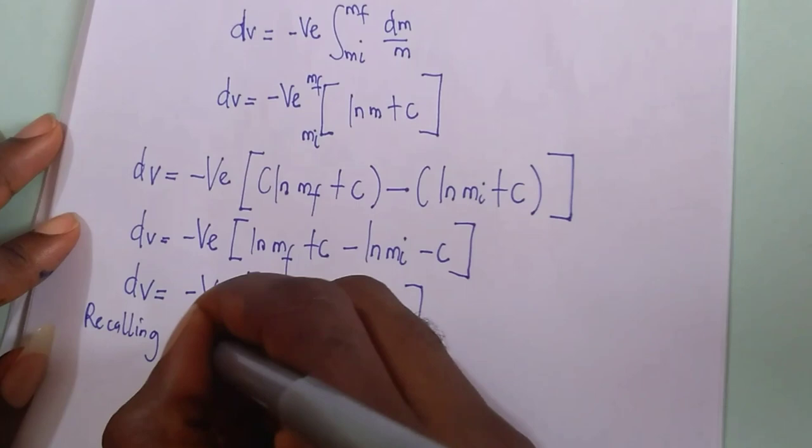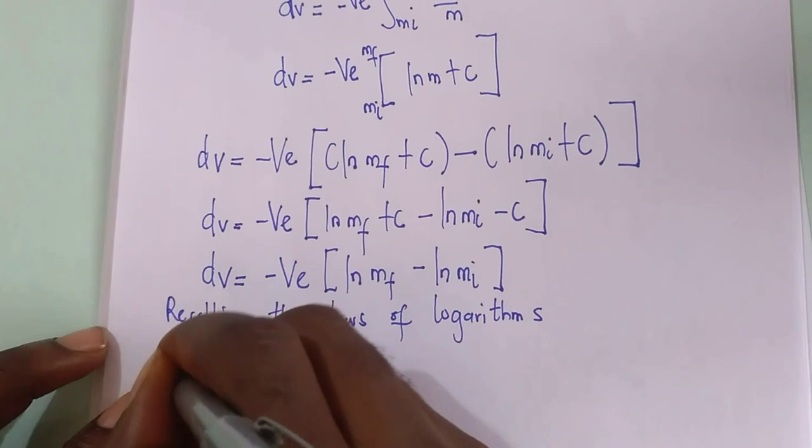Now, recalling the law of logarithms, ln m_f minus ln m_i equals to ln m_f over m_i.